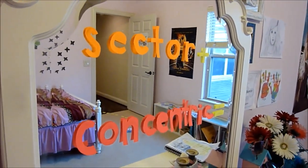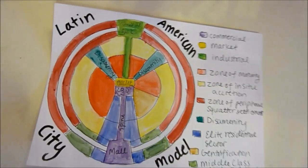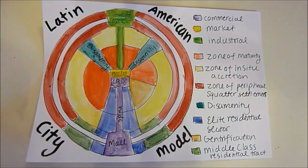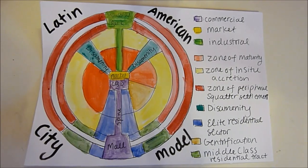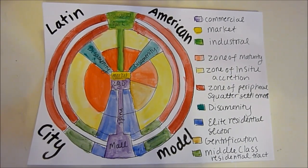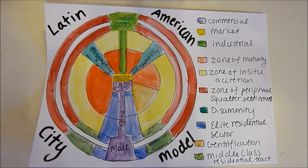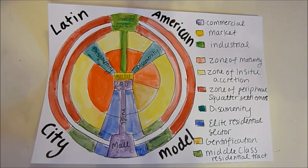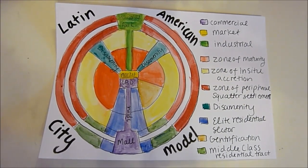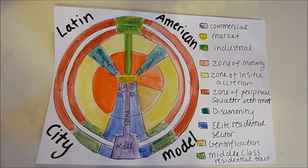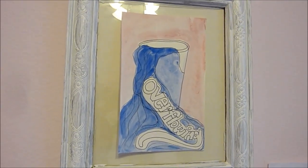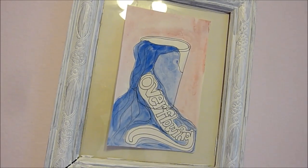The Latin American city model is like a mix of the sector model and the concentric zone model. The CBD is located in the center, but it is divided into two sectors: the market sector and the high-rise sector. From the CBD, a commercial spine branches out and is surrounded by the high-class residential sector. The rest of the model is composed of concentric zones of lower- and middle-class residences, where socioeconomic class decreases the further from the CBD you travel. Since many Latin American cities have overflowing populations, where many people live on the outskirts in slums, this model demonstrates how some of the richest people in the elite sector can live next to the poorest residents of the slums.